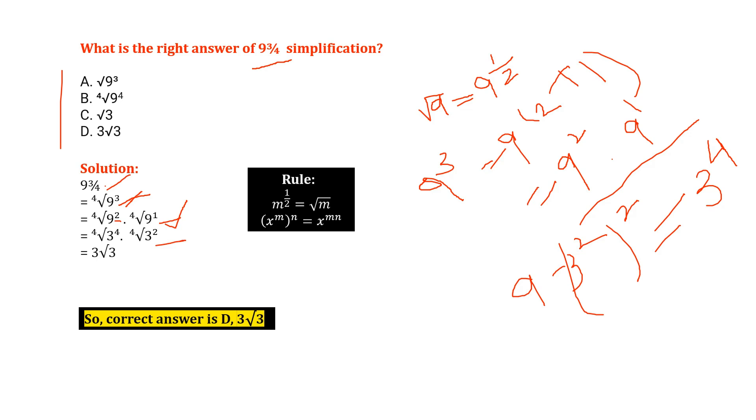Then the next line we got our answer 3 root 3. So how we get it? Because we already know if we have root 9, root 9 we can write down as 9 to the half.